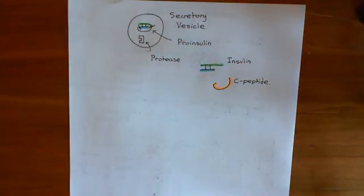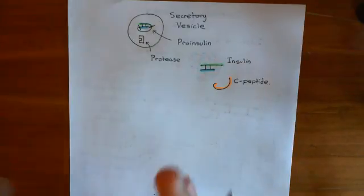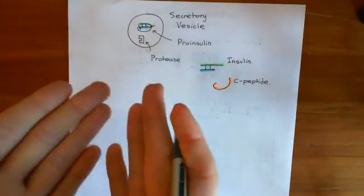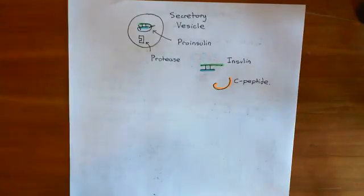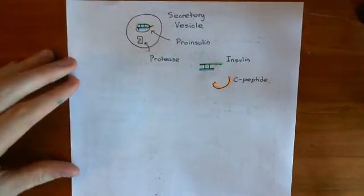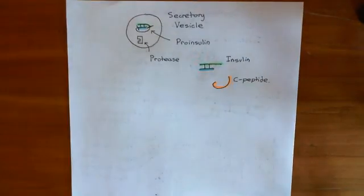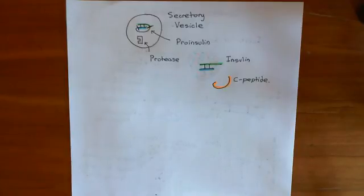Now that we've discussed the synthesis of insulin and also the storage — because the insulin will just be stored in the secretory vesicle until it's time to be secreted — let's now discuss the secretion. But we'll do that in the next video.